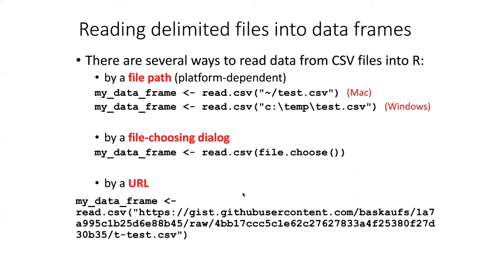The best solution is to pass a URL into the read.csv function. The advantage of this is it's not at all platform dependent and it is easy to accomplish. The difficult part is getting the file onto the internet, but I recommend using gist, which is a feature of GitHub. It allows you to very easily put files on the internet that can then be accessed through a URL.